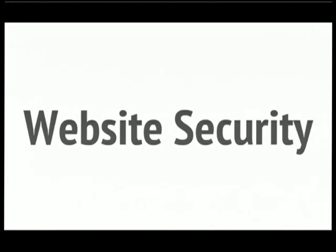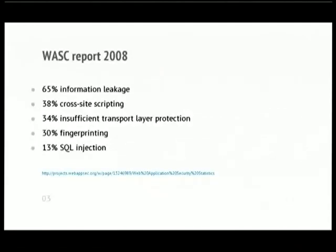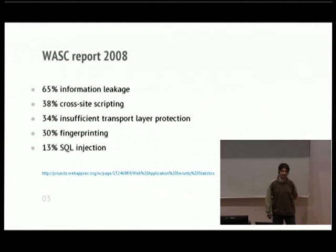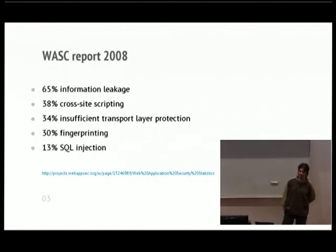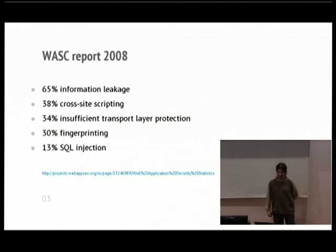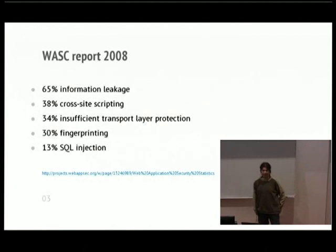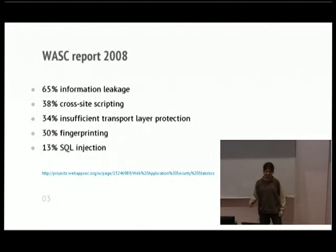First, let's have a look at web security in general. There is this organization called Web Application Security Consortium that does some web security projects and produces some reports. In 2008, they did some testing of about 12,000 websites, various kinds of testing, various kinds of websites, and they found quite disturbing results. 65% of the websites contain some form of information leakage, meaning some users can access information which they shouldn't. 38% of websites are vulnerable to cross-site scripting, meaning that you can inject some JavaScript somewhere which does some harmful things for users.